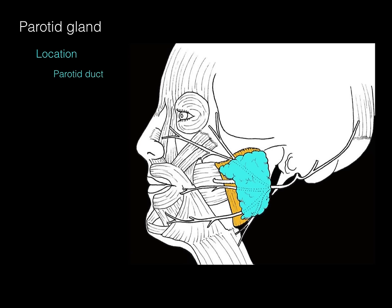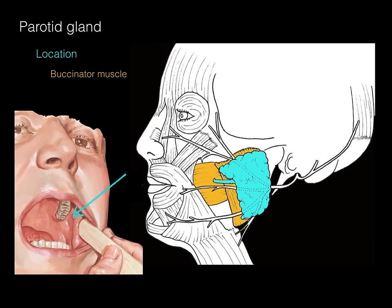That's where the parotid is located. The parotid duct courses through the front of the parotid gland and then pierces the buccinator muscle. On the internal surface of the buccinator is the opening by the second maxillary molar, where the parotid duct dumps saliva into the oral cavity.